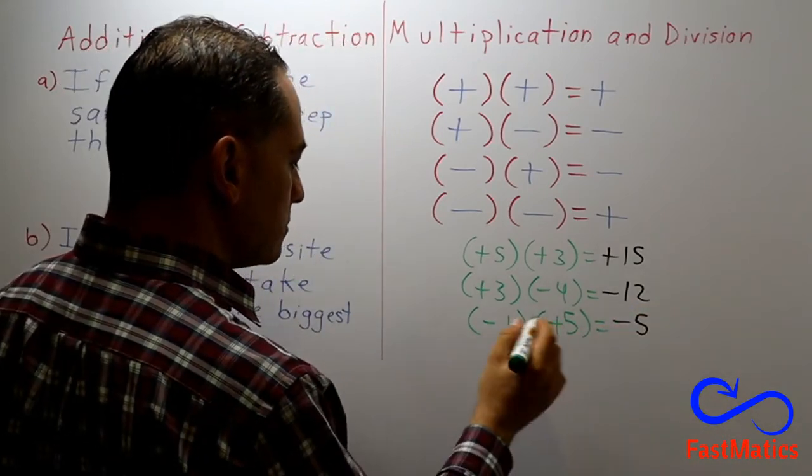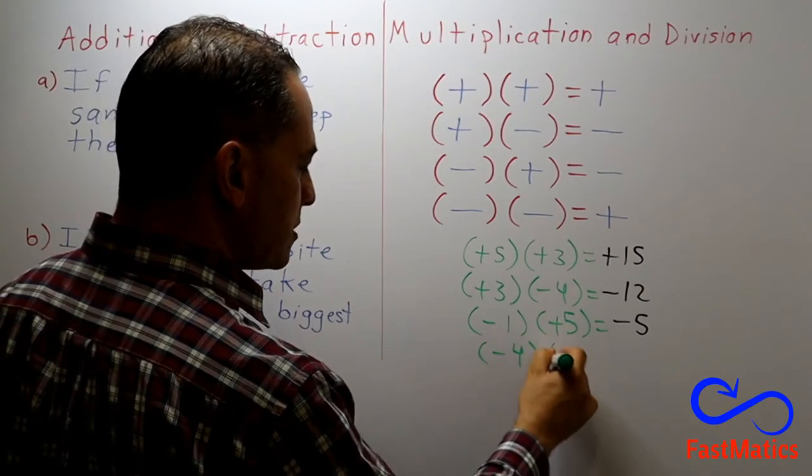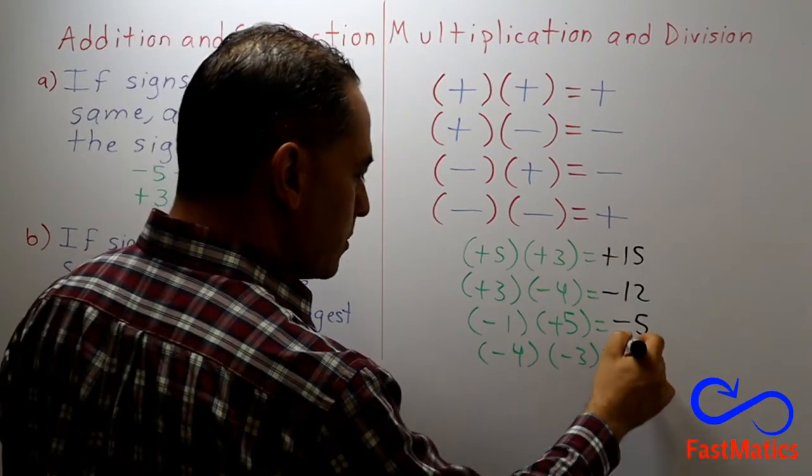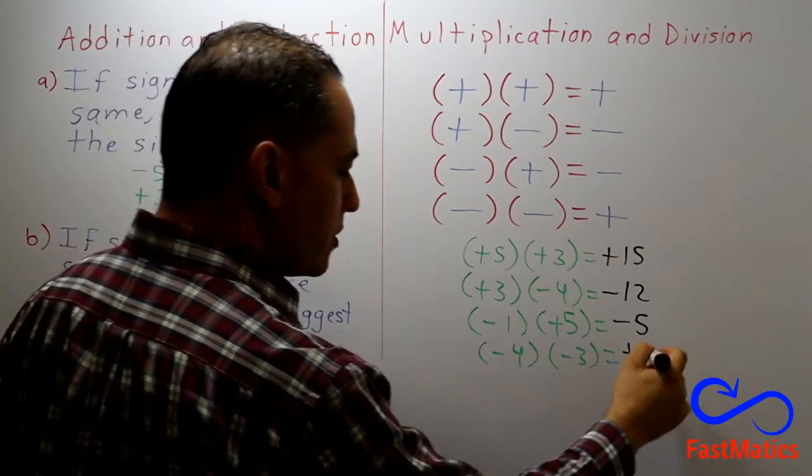Finally, minus four times minus three equals negative times negative, positive. Four times three, twelve.